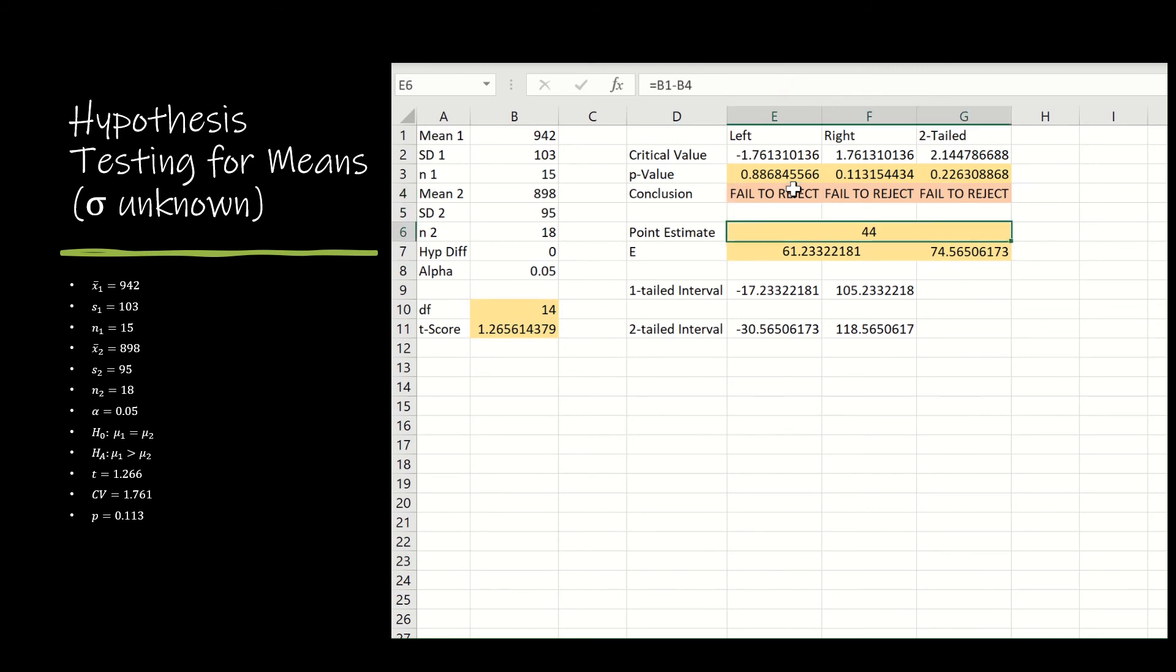For our intervals, our point estimate, if you'll recall, is just mean 1 minus mean 2. So b1 minus b4. And then E is different, whether it's left and right-tailed or two-tailed. So if it's one-tailed, remember I'm going to use that positive critical value,